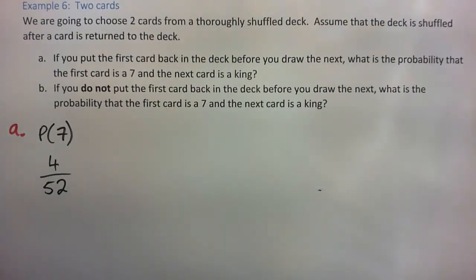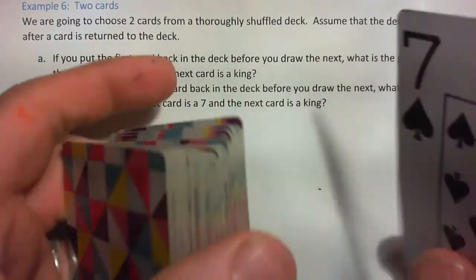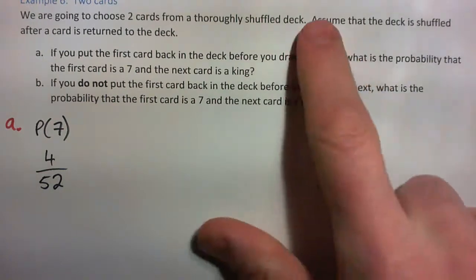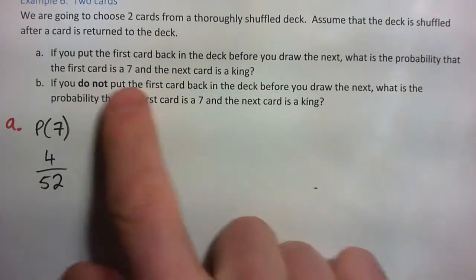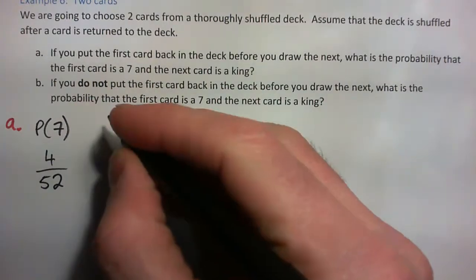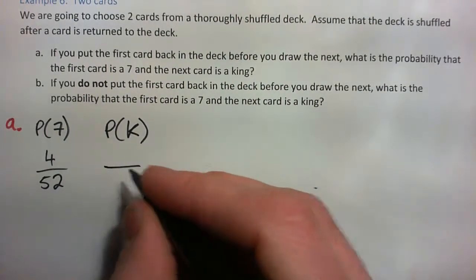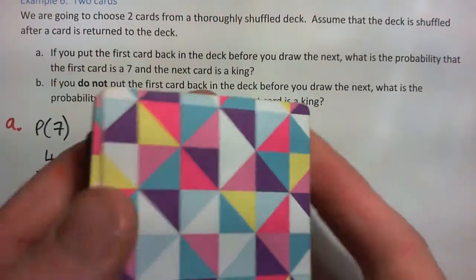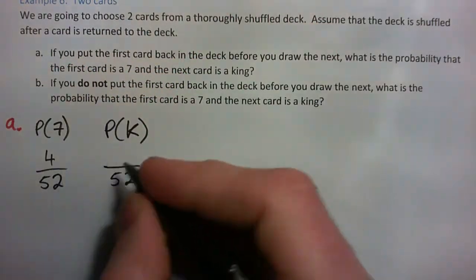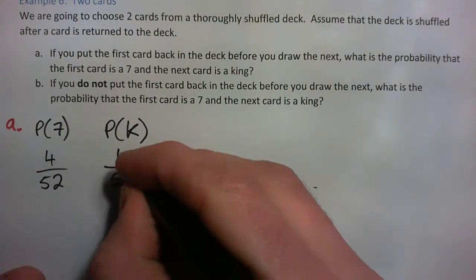Now we have drawn a 7 the first time around. But then we put the first card back in the deck before we draw the next. We put it back in and now we shuffle — assume the deck is shuffled after the card is returned. What is the probability that the next card is a king? Well, there are in fact 52 cards in here because we put the 7 back in. There are four kings, so it's just 4 out of 52 again.